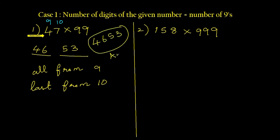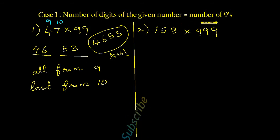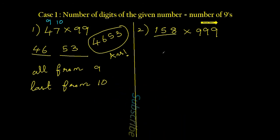Isn't that really quick? We solved it in one second. As I was explaining the steps it took more time, but when you practice yourself it will simply take one or two seconds. Second question: 158 times 999. Step one: reduce one from 158, giving 157 — that is the first part of the answer.